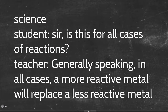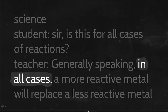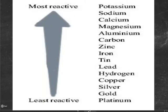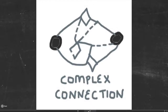Here's a science example. The student asks, 'So is this the case for all reactions?' and the teacher says, 'Well, generally speaking, in all cases a more reactive metal will replace a less reactive metal.' You can see the student is learning a basic set of connections which gives a principle: if the student can identify the more reactive metal, they know it will replace the less reactive metal. The connection between them is crystal clear.